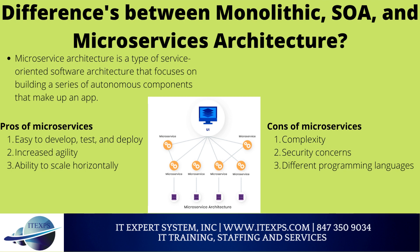Microservice architecture is a type of service-oriented software architecture that focuses on building a series of autonomous components that make up an app. Pros of microservices: easy to develop, test, and deploy — small single services can be built, tested, and deployed independently, which facilitates and speeds up development and release. Increased agility — several teams can work on their services independently and quickly. Each individual part of an application can be built independently due to the decoupling of microservice components. For example, you may have a team of 100 people working on the whole app, or you can have 10 teams of 10 people developing different services.